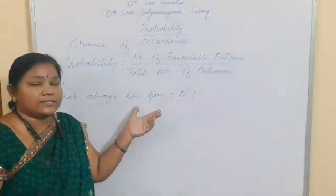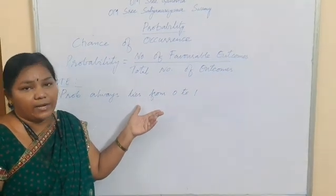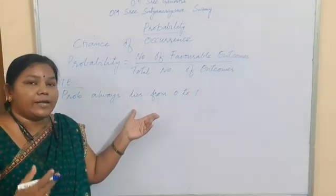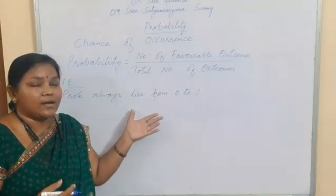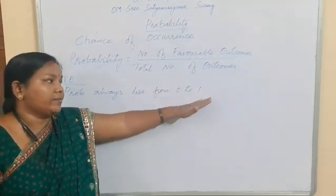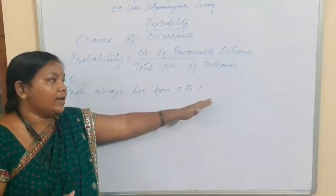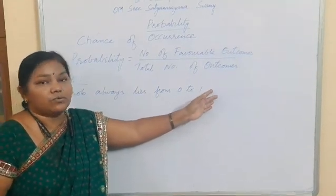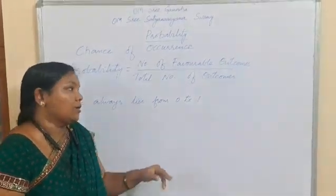Less than 0 means the values are negative values. For example, minus 2, minus 5, minus 100, and so on. Greater than 1 means all positive values greater than 1, that is 2, 5, 10, and so on.